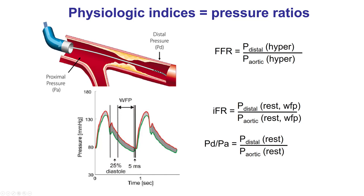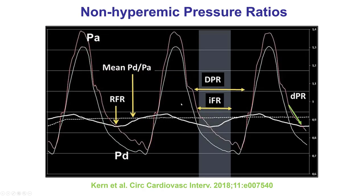There are multiple non-hyperemic indices, which are similar — the ratio of pressure distally to pressure proximally in the aorta through the guide — but calculated without causing hyperemia. Several are measured during different parts of the cardiac cycle. For example, IFR, the original non-hyperemic index, was measured during diastole during the so-called wave-free period, but there are several other indices measured during diastole or sometimes during the entire cardiac cycle, such as the mean PD/PA.